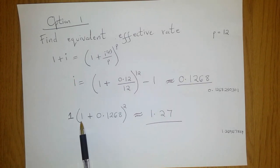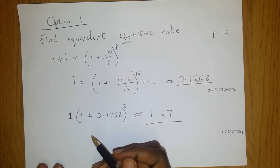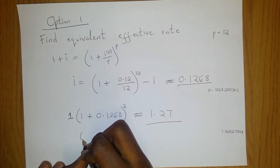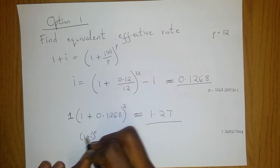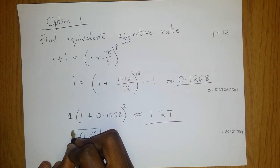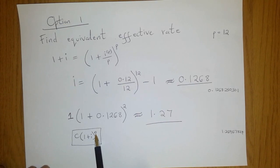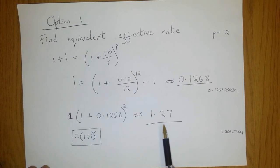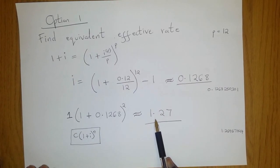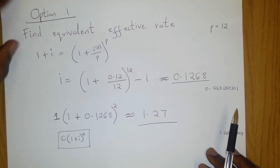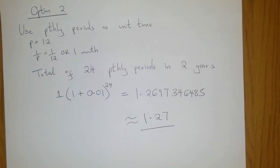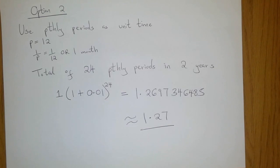Using this new equivalent effective rate, we find our accumulation after two years using the compound interest formula from Unit 2: (1 + i)^n, where our initial amount C is 1, i is the equivalent effective rate we just calculated, and n is two years. After two years, this amount of 1 accumulates to approximately 1.27 under Option 1.